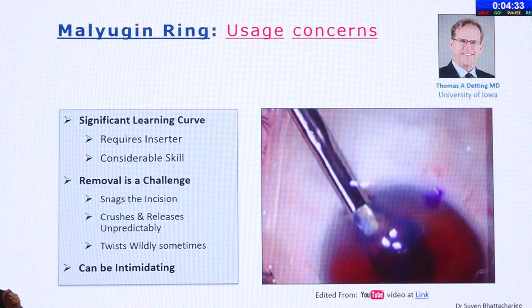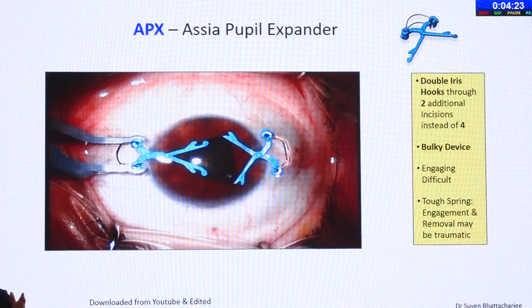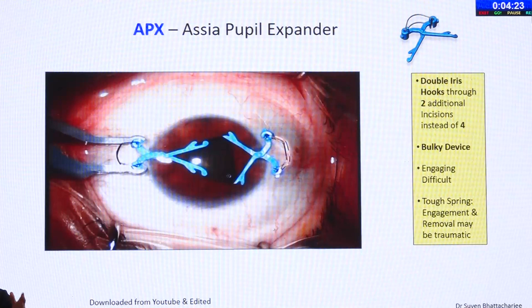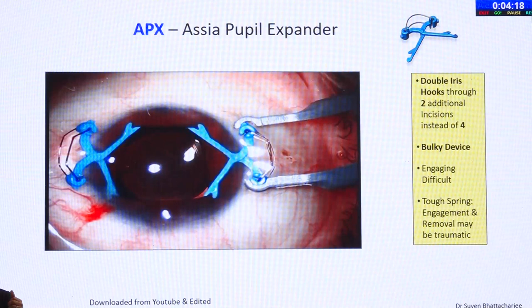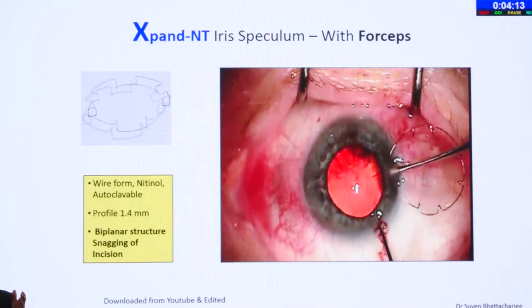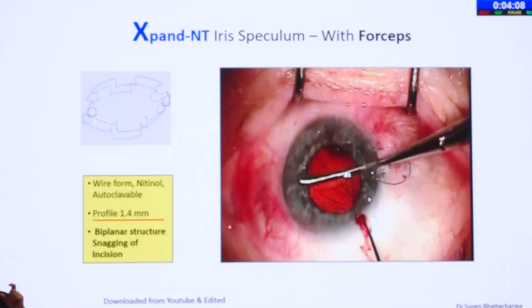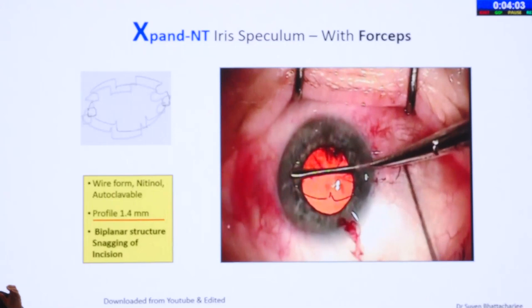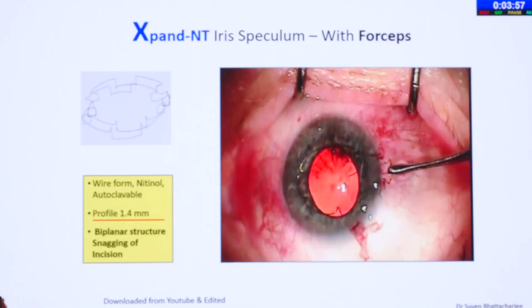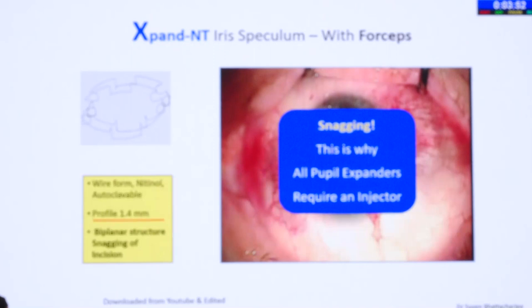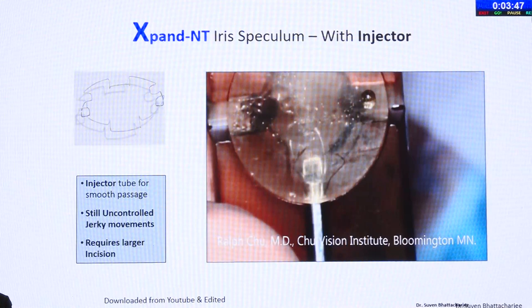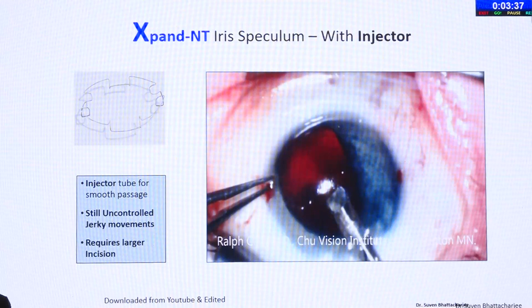The APX device is basically double iris hooks through two additional incisions instead of four — it is pretty bulky and has a tough spring, so it hasn't really gained popularity. The Expand NT iris speculum is nitinol, autoclavable, with a high profile of 1.4 mm. Its biplanar structure again snags the incision — it is a struggle to put in without an injector. Essentially, all injectors came about to avoid the problem of snagging, because all these devices were biplanar. With Expand NT and an injector it became a little easier, but controlling it was difficult and it hasn't been very popular, though it can be reused.